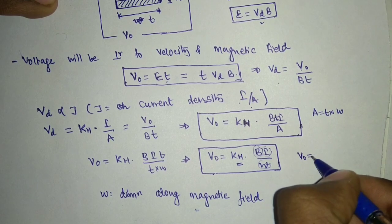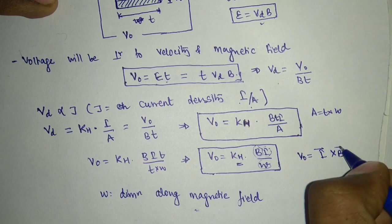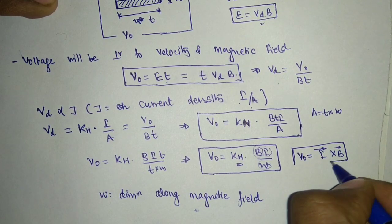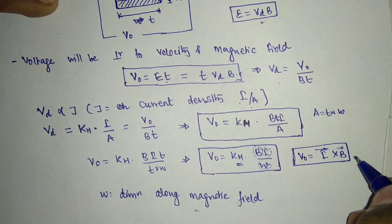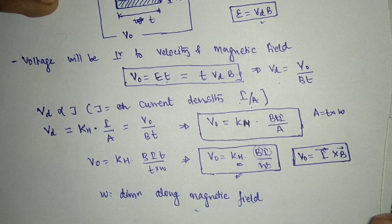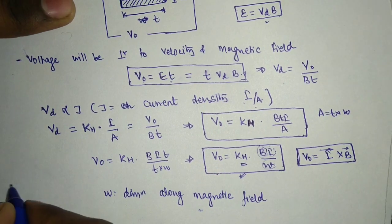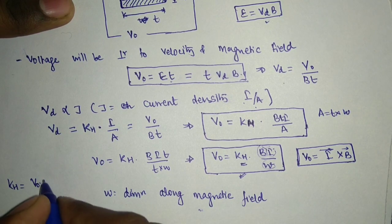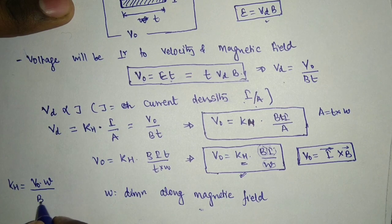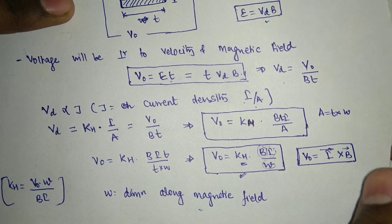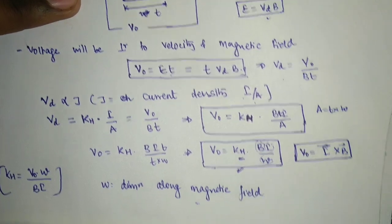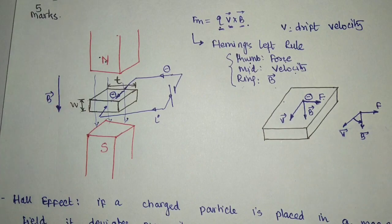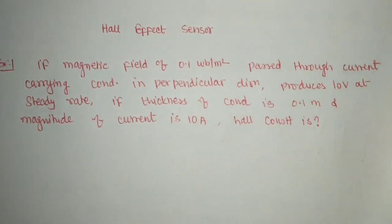The direction of output voltage can be given by V0 = I×B. So that will give us the voltage direction. The analysis is very simple. Now let us see some practice questions that will clear out our concept. KH can also be expressed as KH = V0·W/(B·I). If only one dimension is given, we assume that is W — it does not matter whether the question denotes it with T or W, we take the dimension which is along the magnetic field.